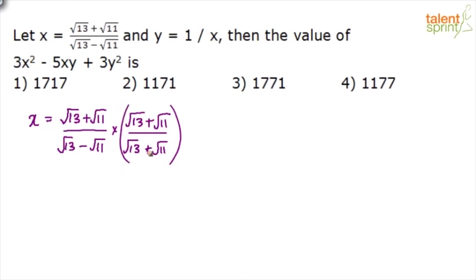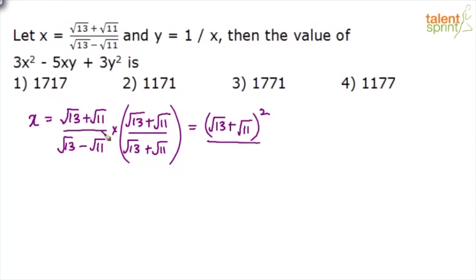We're basically not changing anything — multiply and divide both by the same value. In the numerator we get (√13 + √11) whole squared. The denominator is in the form of (a + b)(a - b), so the answer should be a² - b². That is √13² minus √11², which is 13 minus 11.